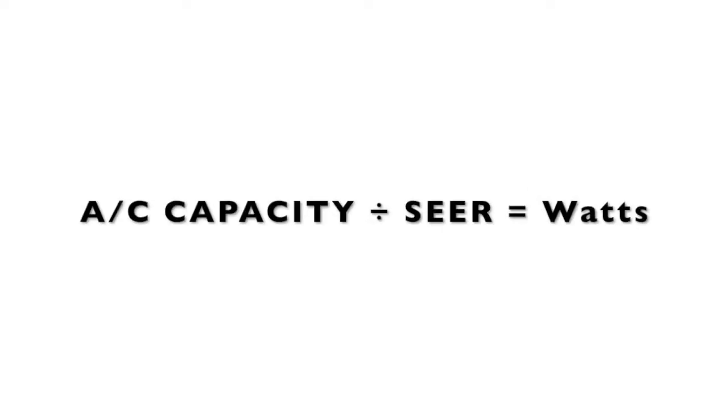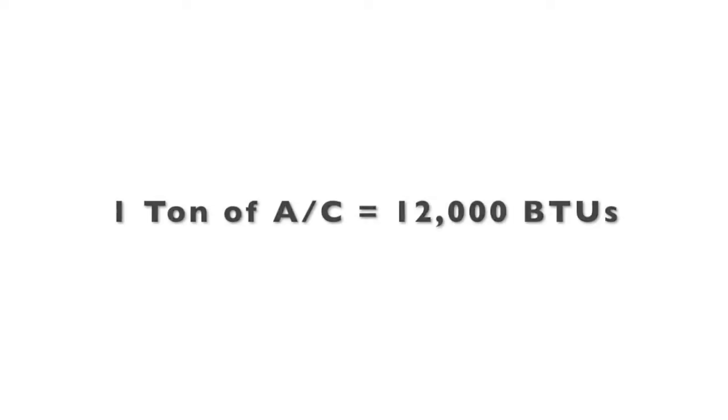What it is: you take the capacity of your air conditioner and divide it by the SEER number, and that gives you the wattage — how many watts of electricity your air conditioner will use. At my house I have a four-ton air conditioner, which is 48,000 BTUs. Every ton of air conditioning is 12,000 BTUs. So a three-ton would be 36,000 BTUs, a five-ton would be 60,000 BTUs.